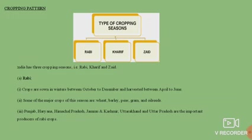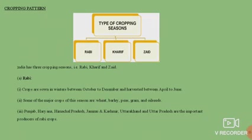Rabi crops are sown in winters between October to December and harvested between April to June. Some of the major crops of the season are wheat, barley, peas, gram and oil seeds. Punjab, Haryana, Himachal Pradesh, Jammu Kashmir, Uttarakhand and Uttar Pradesh are important producers of Rabi crops. Remember that Rabi crops are sown in winters — these are winter crops.